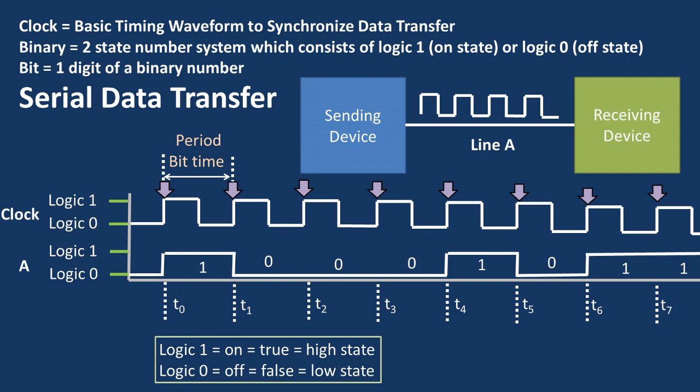We can see from the diagram that for every cycle of the clock, one bit is transferred during the duration of the clock cycle. So at the rising edge of the clock waveform at T0, a one is transferred. At T1, a zero is transferred. And at T2, a zero is transferred, and so on and so forth.